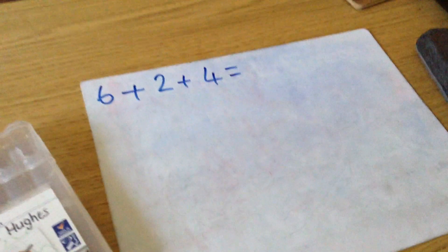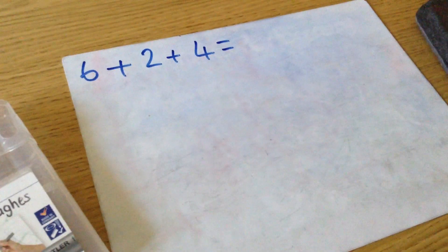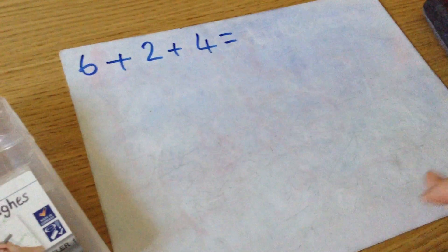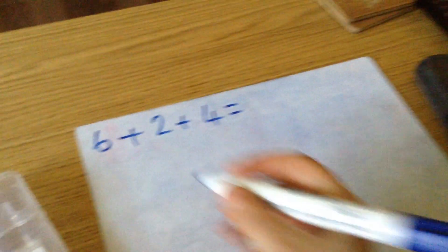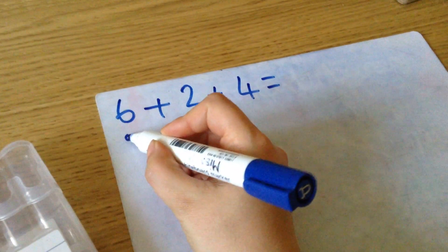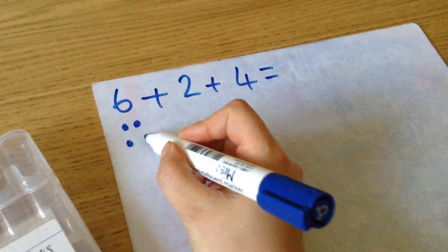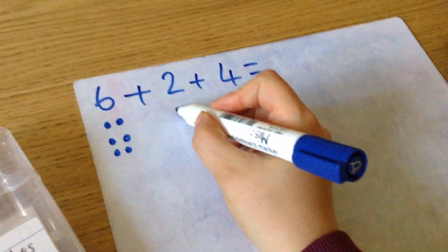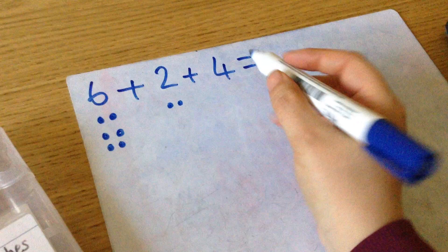So we're going to look at adding three one-digit numbers. For a start, we could look at that these are one-digit numbers. So draw the ones. So six ones, two ones, four ones.